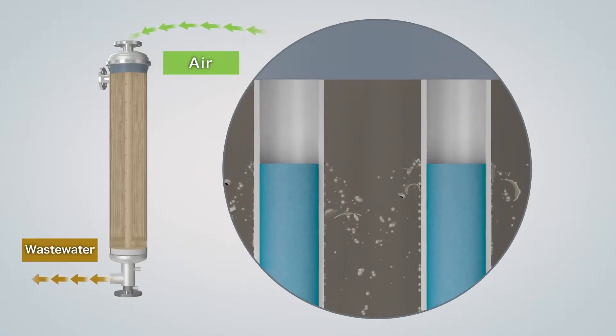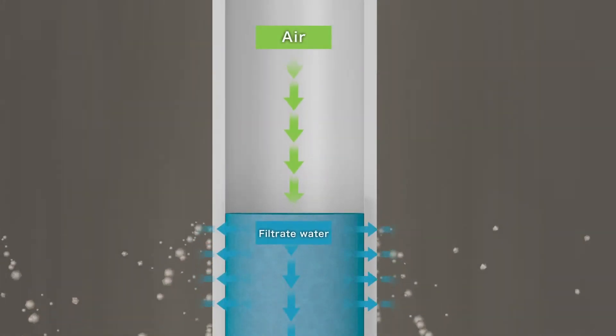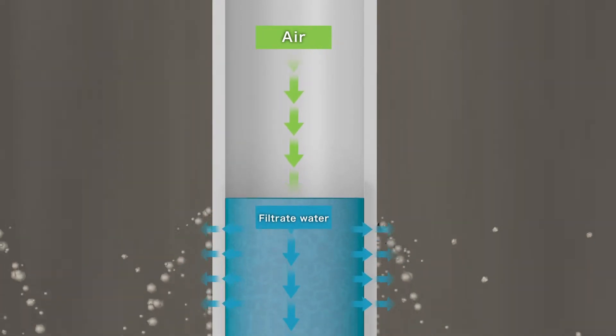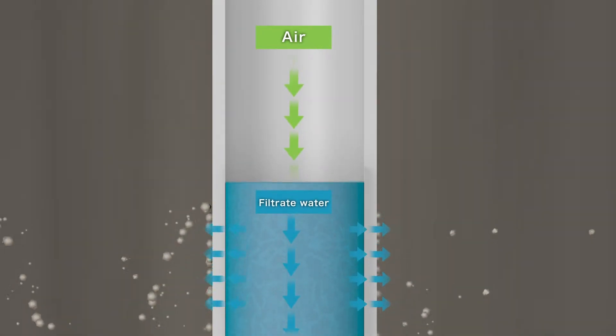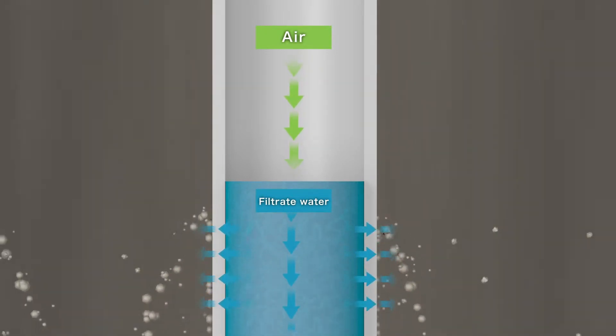The attached particles caused by filtration are removed from the module using physical cleaning. In the air backwash process, compressed air is supplied from the filtrate water side of the module. And by applying pressure to the inside of the hollow fiber membrane, the surface particles are detached.